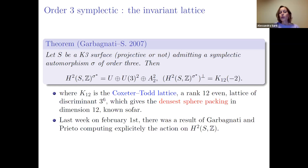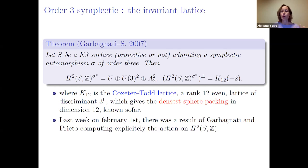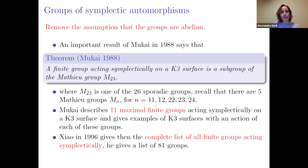The Coxeter–Todd lattice is remarkable because it gives the densest sphere packing in dimension 12 known so far. Classifying all invariant lattices for these abelian groups reveals other dense lattices, which is quite interesting. This is still an active research area — last week I saw a paper by Garbagnati and Prieto on arXiv that explicitly computed the action on H²(S,ℤ), showing that some copies of A₆ are exchanged.